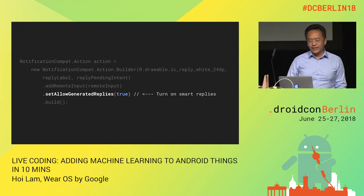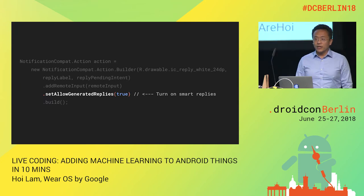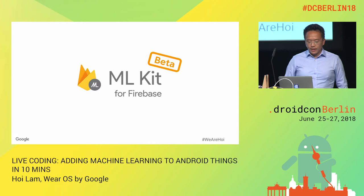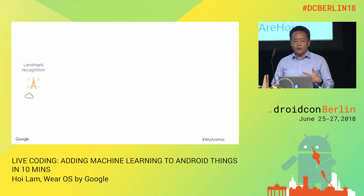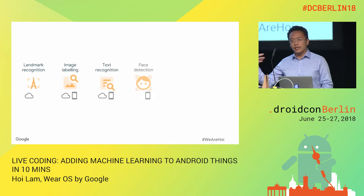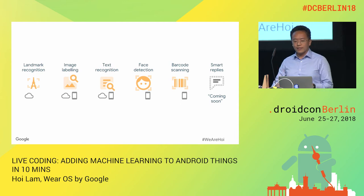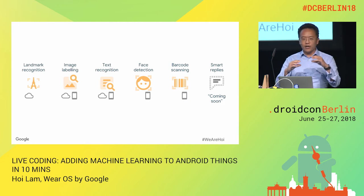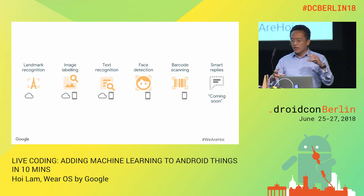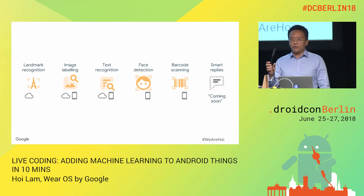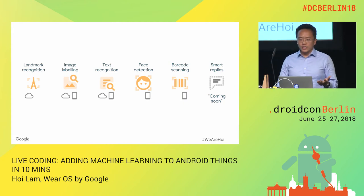The next thing I'm going to talk about is what we just launched at I/O this year: ML Kit. It's currently in beta and provides a number of functions. We're launching with five: landmark recognition, image labeling, text recognition, face detection, and barcode scanning. Below each category, I've put a cloud and a phone icon — the cloud ones rely on Google Cloud Platform for inference, and the phone ones are on-device models you can use offline.